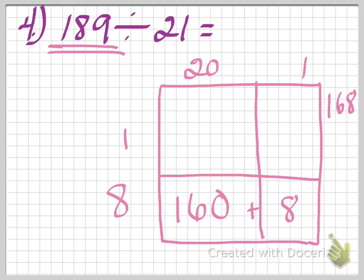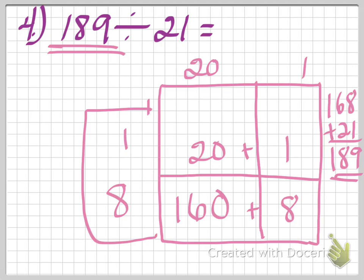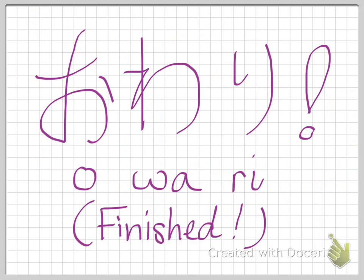Let me do one more. 1 times 20 is 20, and 1 times 1 is 1. So 20 plus 1 is 21. Adding that up: 8 plus 1 is 9, 6 plus 2 is 8, 1 plus nothing is 1 — that's 189. I got the number I started with. So adding the quotient: 1 plus 8 is 9. So 189 divided by 21 equals 9. How'd you do? How are you feeling about this? If you are feeling lost and stuck, please let me know so I can give you some help. We are finished — see you tomorrow, bye-bye!